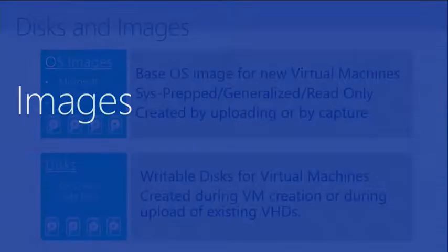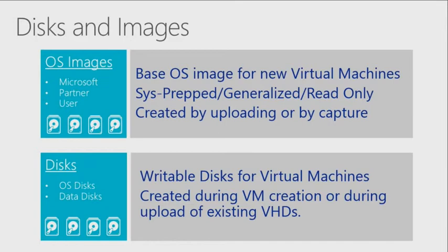There are two types: OS images and disks. OS images are templates — just like sysprep in the traditional world, you generalize a machine and use it as a template to spin up more instances. Disks are different: if you upload a VHD to blob storage, you must specifically register it as a disk in Windows Azure before you can attach it to a virtual machine.